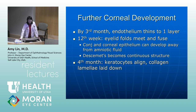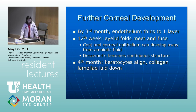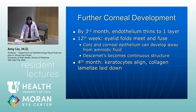By the third month, the corneal endothelium thins down to one layer. By the 12th week, the eyelid folds meet and fuse. The conjunctiva and corneal epithelium start to develop away from the amniotic fluid once the eyelid folds have formed, and Descemet's membrane becomes a continuous structure. By the fourth month, the keratocytes within the stroma align and collagen lamellae are laid down.